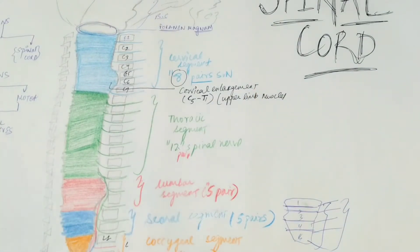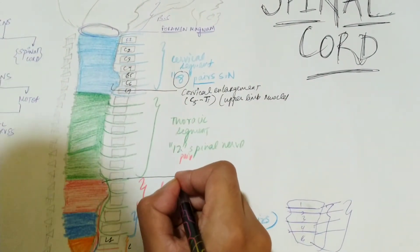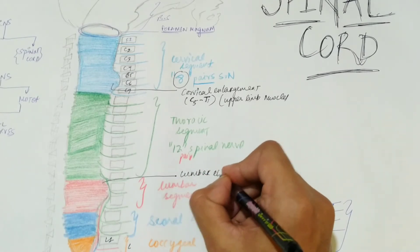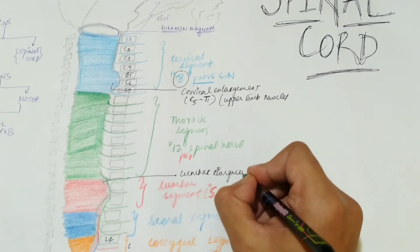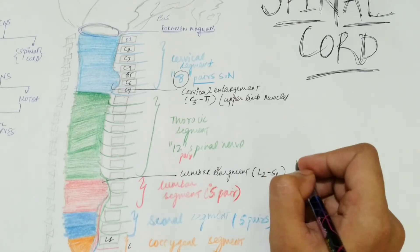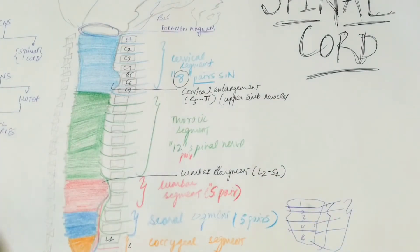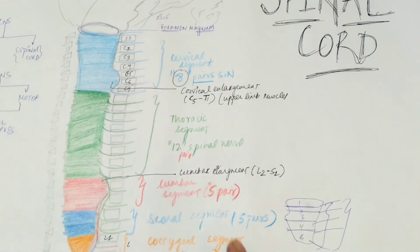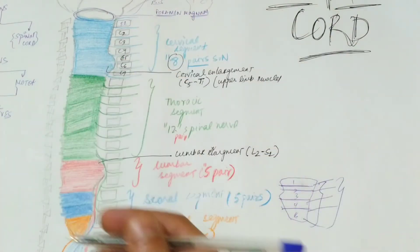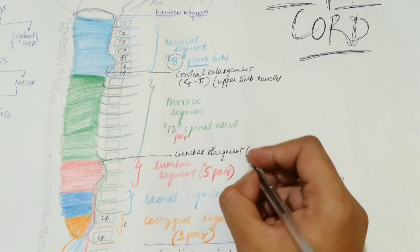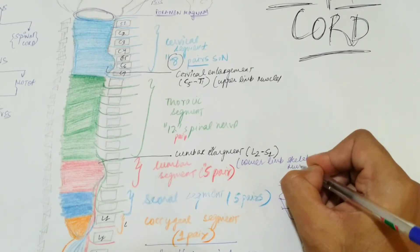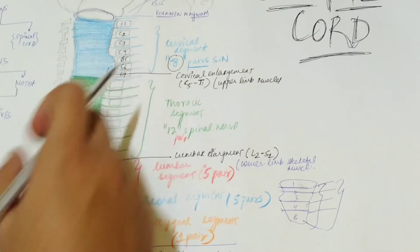Similarly, there is a lumbar enlargement in the lumbar segment. Its level is L2 to S1. This enlargement exists for the supply of the lower limb muscles. There is more gray matter in the ventral horns at this level. So, the cervical enlargement supplies upper limb skeletal muscles, and the lumbar enlargement supplies lower limb skeletal muscles.